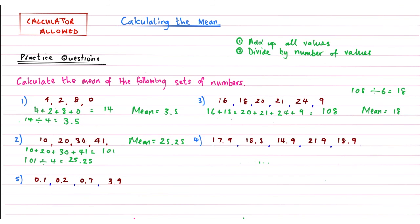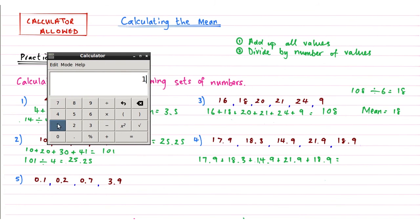Right, so if we move on to question 4. So now this is the first time that you've been asked to add decimals together in your practice questions. But again, don't worry. We just add them together exactly the same as we usually would do with whole numbers. So 17.9 plus 18.3 plus 14.9 plus 21.9 plus 18.9.